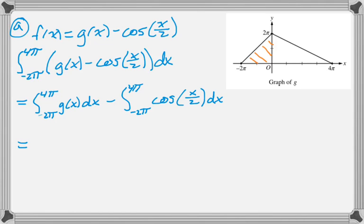Alright, so we have that little region there from negative 2π to 0, which is half of a square. So 2π times 2π is 4π squared, but we only want half of it. Then we have this triangle, which is half of a rectangle, which has 2π and 4π as its side. So 8π squared, but we only get half of that. Which means the definite integral from negative 2π to 4π of g of x is just 6π squared, by adding those.